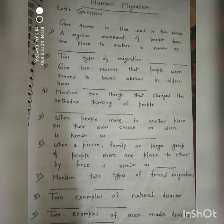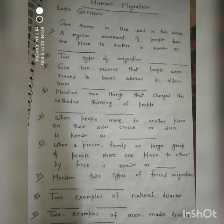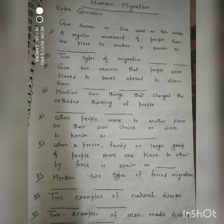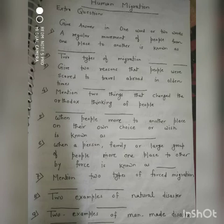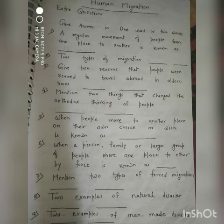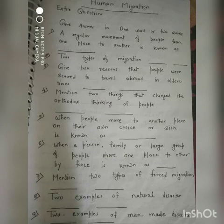Next question: when people move to another place on their own choice or wish, it is known as voluntary migration. Next question: when a person, family, or large group of people move from one place to another by force, it is known as forced migration. Next question: mention two types of forced migration — correct answer: manmade disaster and natural disaster. Next question: give two examples of natural disaster — correct answer: earthquake, flood; you can also add tsunami and many others.